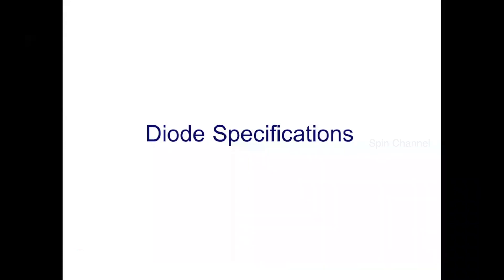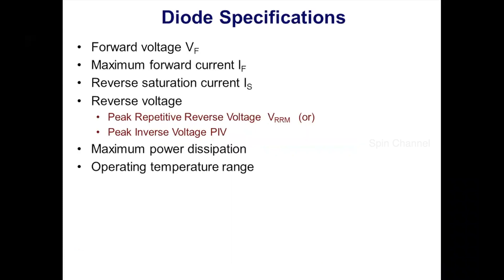Diodes have a number of ratings or specifications. Careful attention has to be given to diode ratings before designing a practical application circuit. Let us look at some important ratings of diode that apply to all types of diodes and applications. A few of the diode ratings are: forward voltage drop, maximum forward current, reverse saturation current, reverse voltage, and maximum power dissipation. Let us see in detail about these specifications.